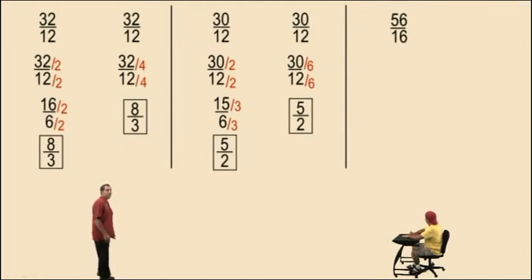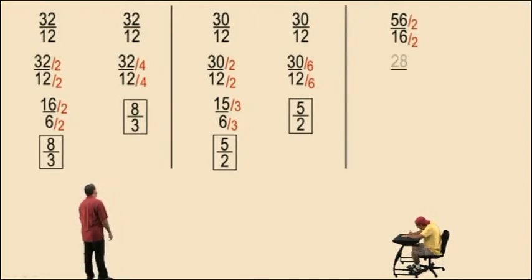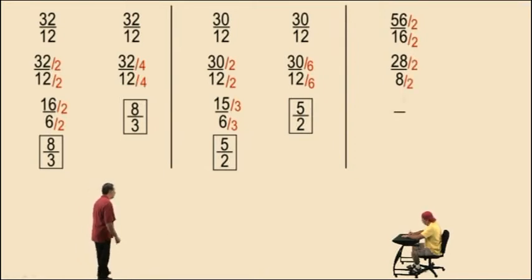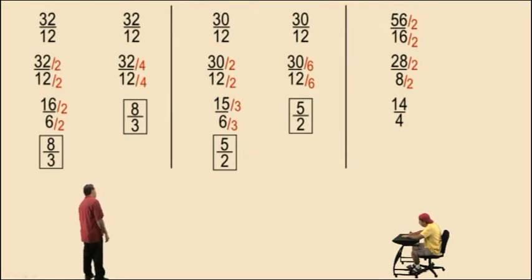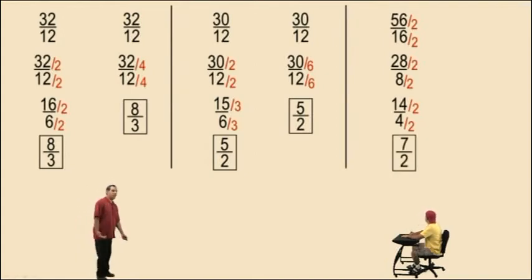How about 56 divided by 16? Don't get scared — notice they're both even numbers, so we can divide by 2. 56 divided by 2 is 28, 16 divided by 2 is 8. Again we have even numbers, so let's divide by 2: 28 divided by 2 is 14, 8 divided by 2 is 4. Again we have even numbers, so divide by 2 again: 14 divided by 2 is 7, 4 divided by 2 is 2, and we get 7 halves — that's our answer.